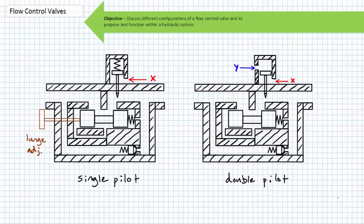Flow control valves appear in the oddest of places — they're not always external separate entities. You will find flow control valves internal to a cylinder acting as cushions on extension and retraction. You might find them internal to a directional control valve where one position happens to meter flow. Additionally, you'll find flow control valve functionality inside something called a proportional valve, where flow is proportionally dependent upon spool position. We'll deal with all these subjects in later lectures.